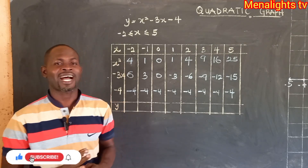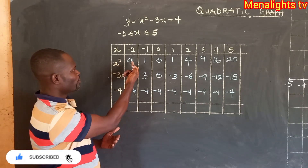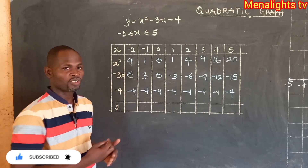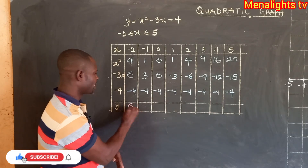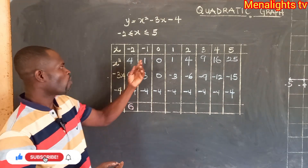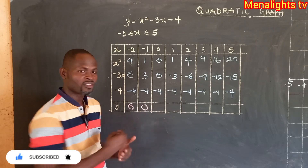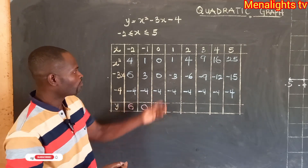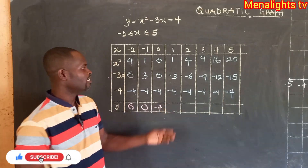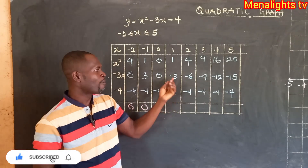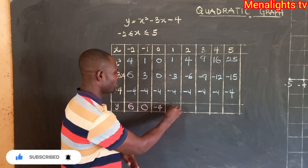Now we are going to add to find the values of y. For x equals negative 2: 4 plus 6 minus 4 — 4 plus 6 is 10, and 10 minus 4 gives 6. For x equals negative 1: 1 plus 3 minus 4 — 1 plus 3 is 4, and 4 minus 4 gives 0. For x equals 0: 0 plus 0 minus 4 gives negative 4. For x equals 1: 1 minus 3 minus 4 gives negative 6.